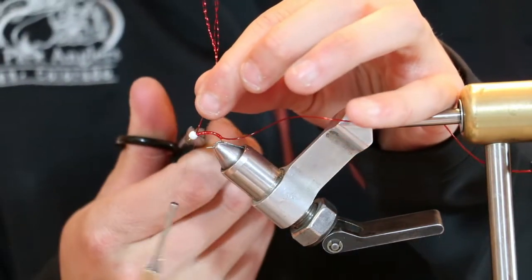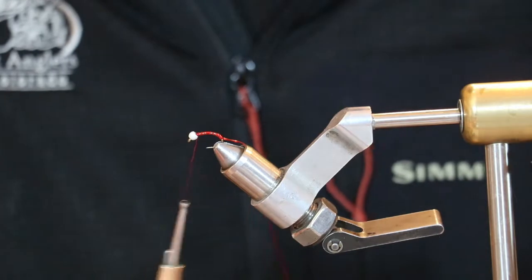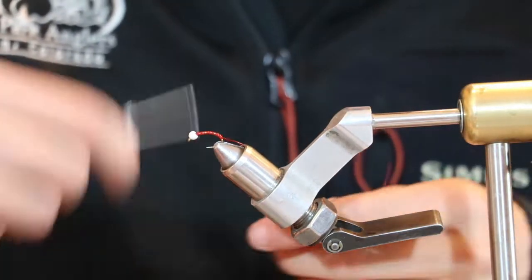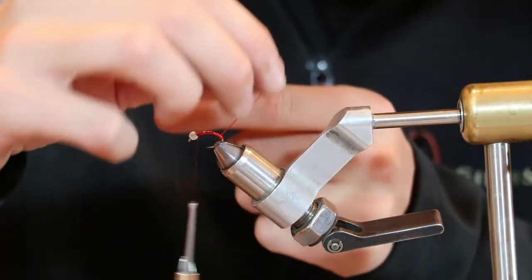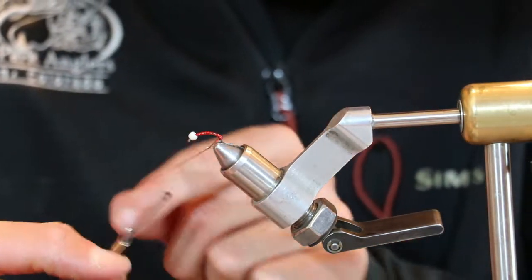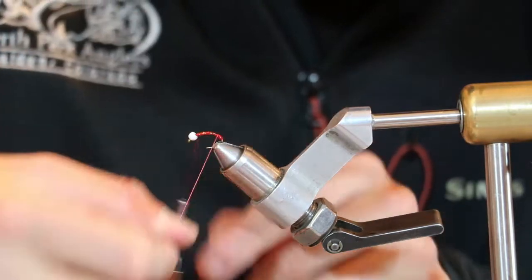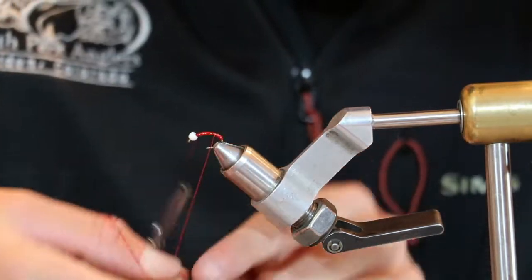And you'll take and snip out that excess. Grab that red stretch tubing and make just some open wraps, ribbing your way up the body there.